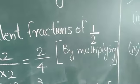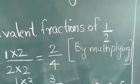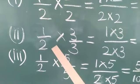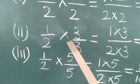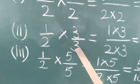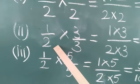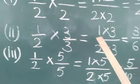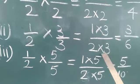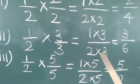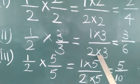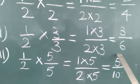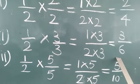Here we are getting by multiplying. For the second equivalent fraction: 1 by 2 multiplied by 3 by 3 — the numerator and denominator multiplying with 3. So, 1 into 3 by 2 into 3. 1 into 3 is 3; 2 into 3 is 6. So one more equivalent fraction: we got 3 by 6.